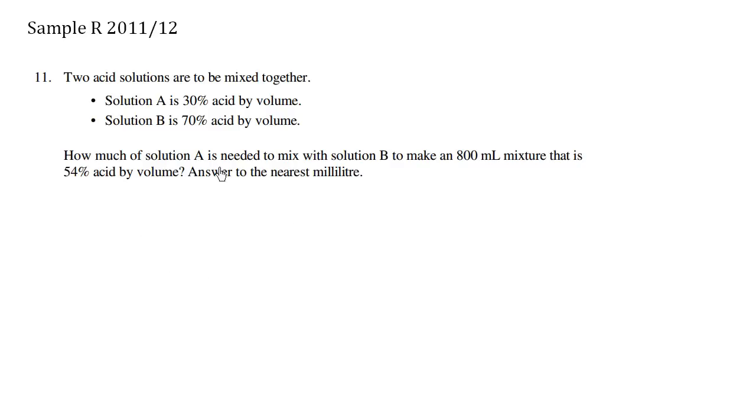Now we re-read the question to come up with a basic fact. How much of solution A is needed to mix with solution B to make 800 milliliters? So let's define some variables. We're going to let A be the volume of solution A. Let B be the volume of solution B.